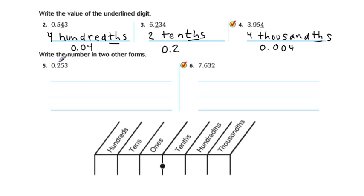And so it's 0.253, but it's 253 of something. Knowing where the number ends is going to help us name that number. It doesn't end in the tenths place because there are more numbers after that. It doesn't end in the hundredths place because there's another number after that. It ends in the thousandths place.